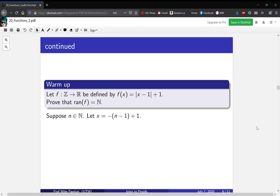Well, let's prove this. Suppose that n is a natural number, and let x be this thing that I've defined, -(n - 1) + 1. Now, you might have a question as to how I came up with this, and that's a great question. We're going to come back to it at the end of this proof. For now, just take it for granted.